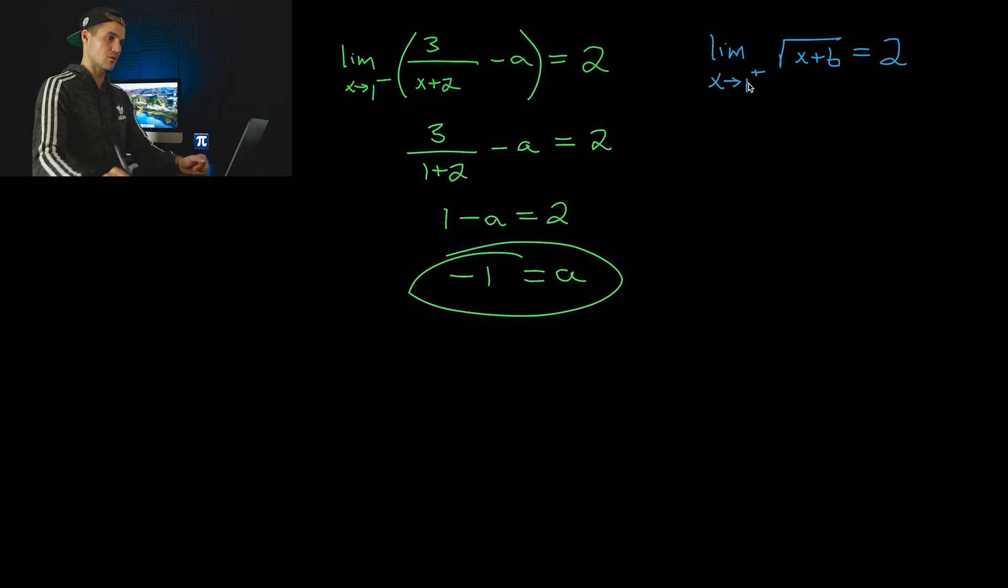For this limit, I plug in x equals 1. So square root of 1 plus b has to equal 2. To get rid of the root, square both sides. That means 1 plus b equals 4, so b is 3.